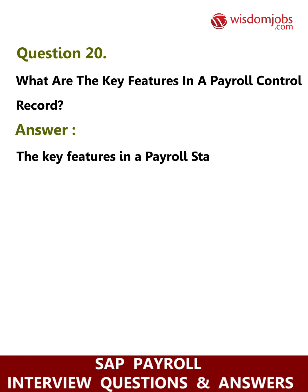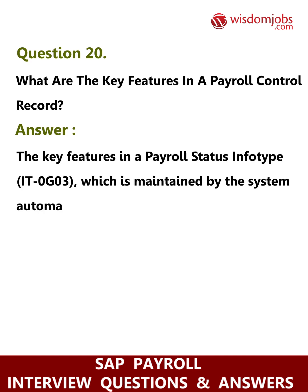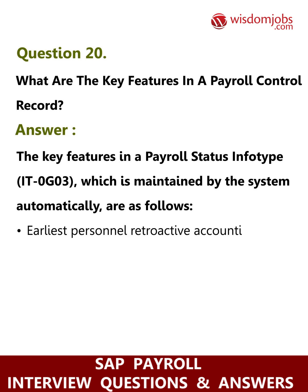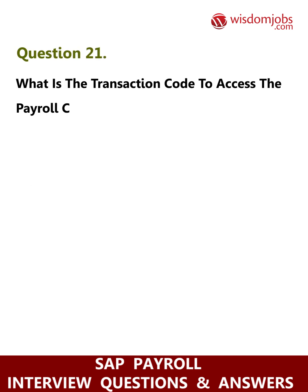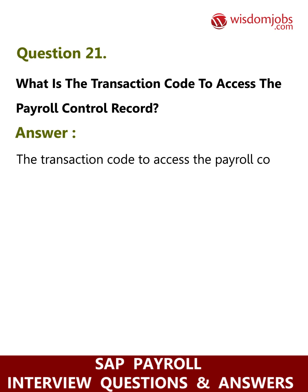Question 20: What are the key features in a payroll control record? Answer: The key features in a payroll status info type IT0003, which is maintained by the system automatically, are as follows: earliest personnel retroactive accounting date and payroll period. Question 21: What is the transaction code to access the payroll control record? Answer: The transaction code to access the payroll control record is PE03.